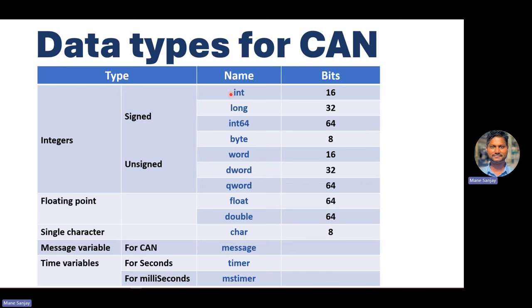The integer keywords are: int, long, int64, byte, word, dword, float. These indicate the bit length — for example, a signed integer is 16-bit, and float/double are 64-bit. Message is a keyword that lets you receive or transmit CAN messages. Timer variable: when you use 'timer', it works in seconds; when you prefix it with 'ms', it works in milliseconds.